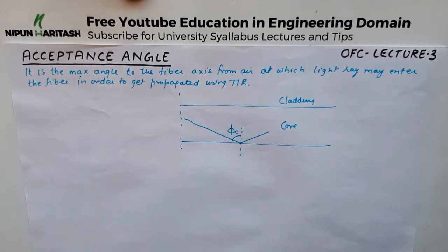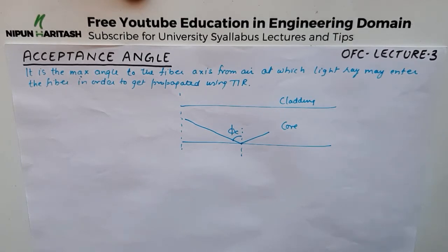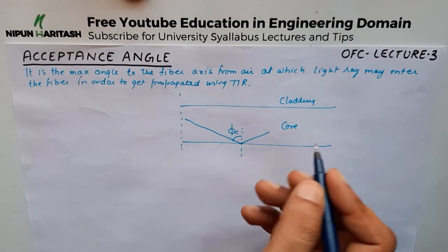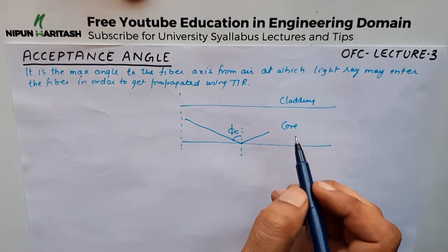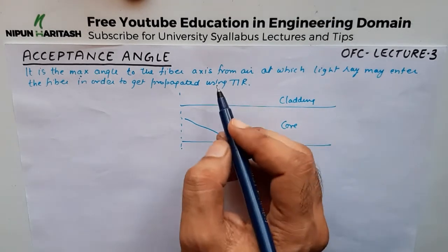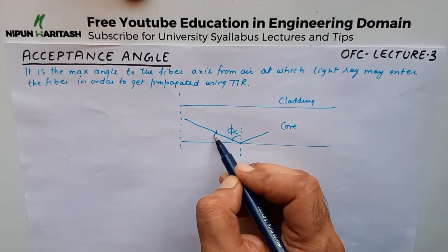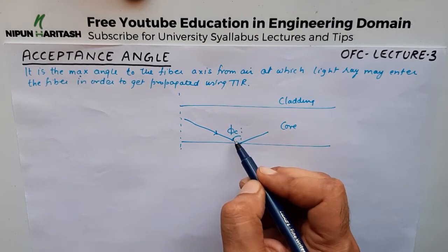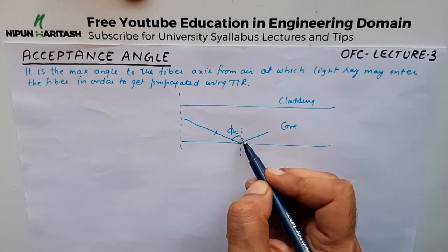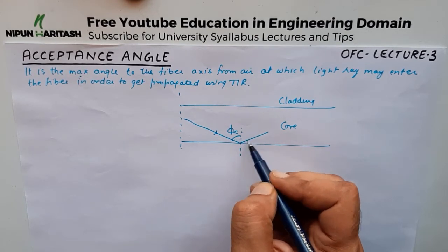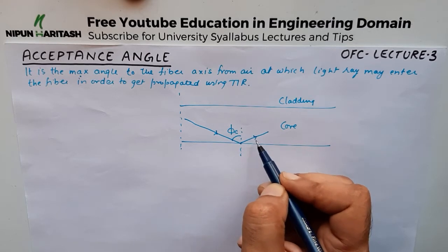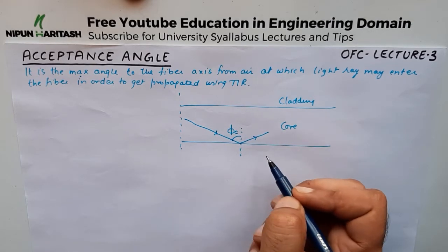Hello friends, welcome to another tutorial in the optical fiber communication series. In this tutorial we will talk about acceptance angle. We already know that inside the core and the cladding, we send a ray of light at a certain angle greater than the critical angle so that it turns back into the core itself and does not go into the cladding.